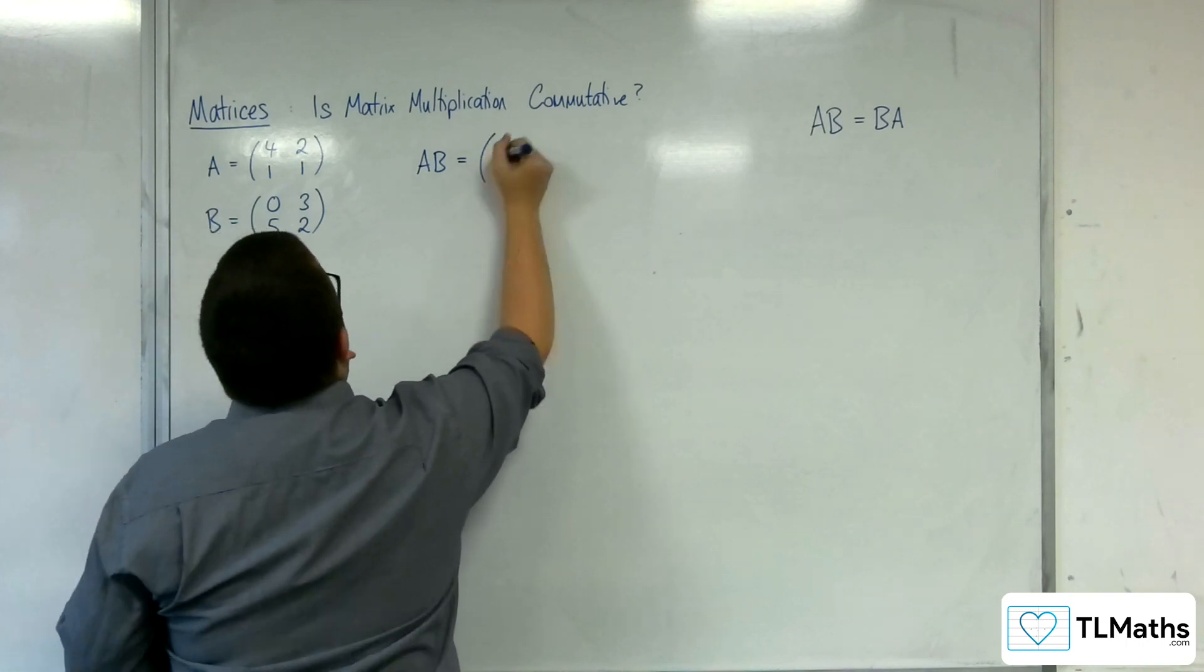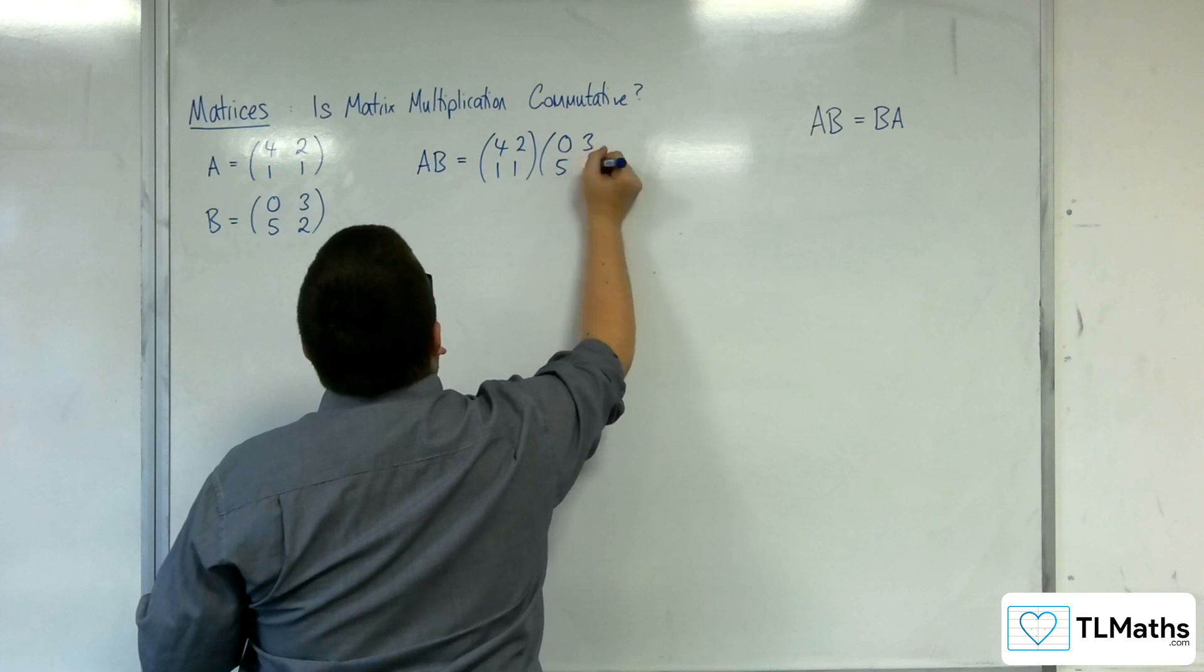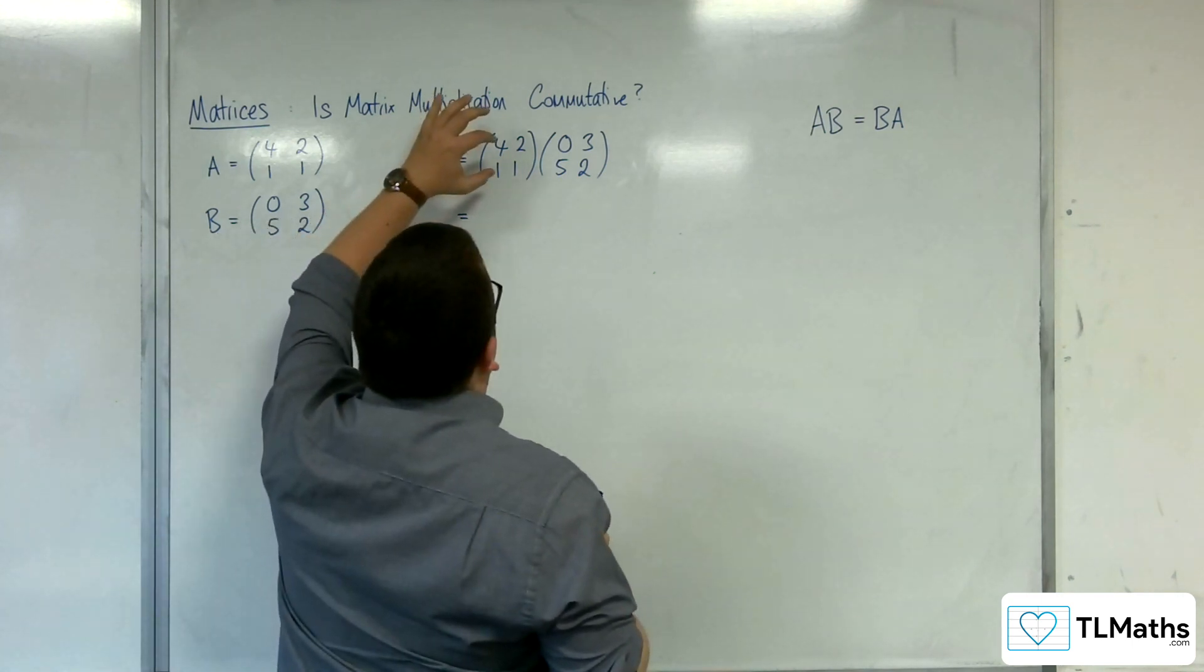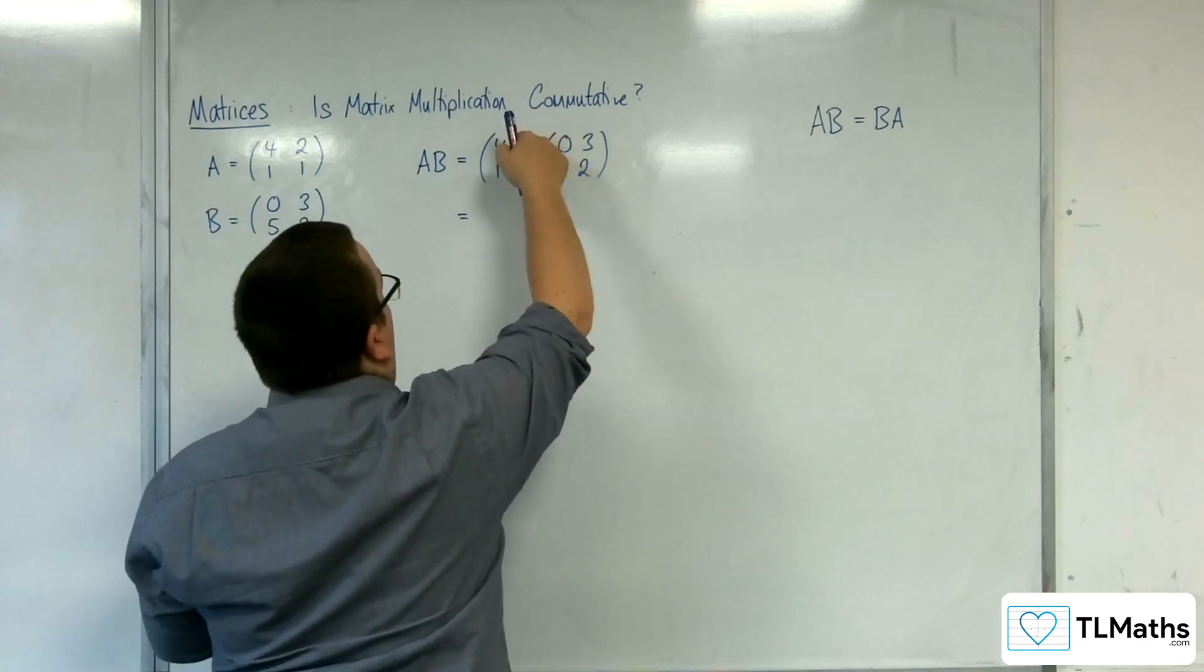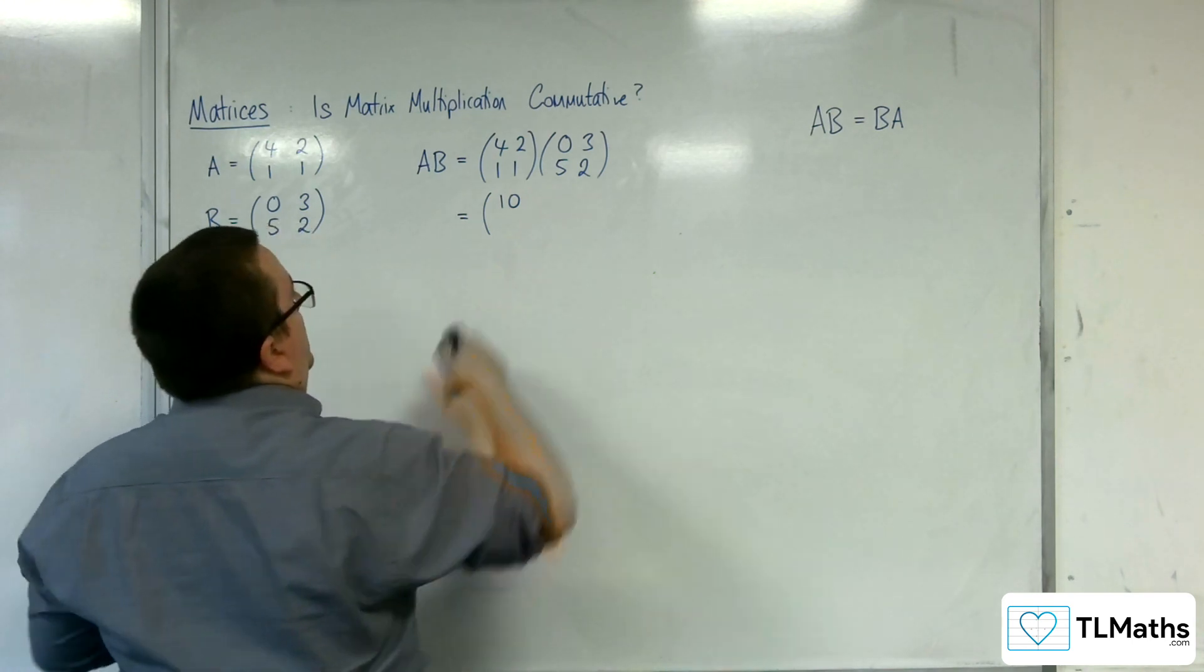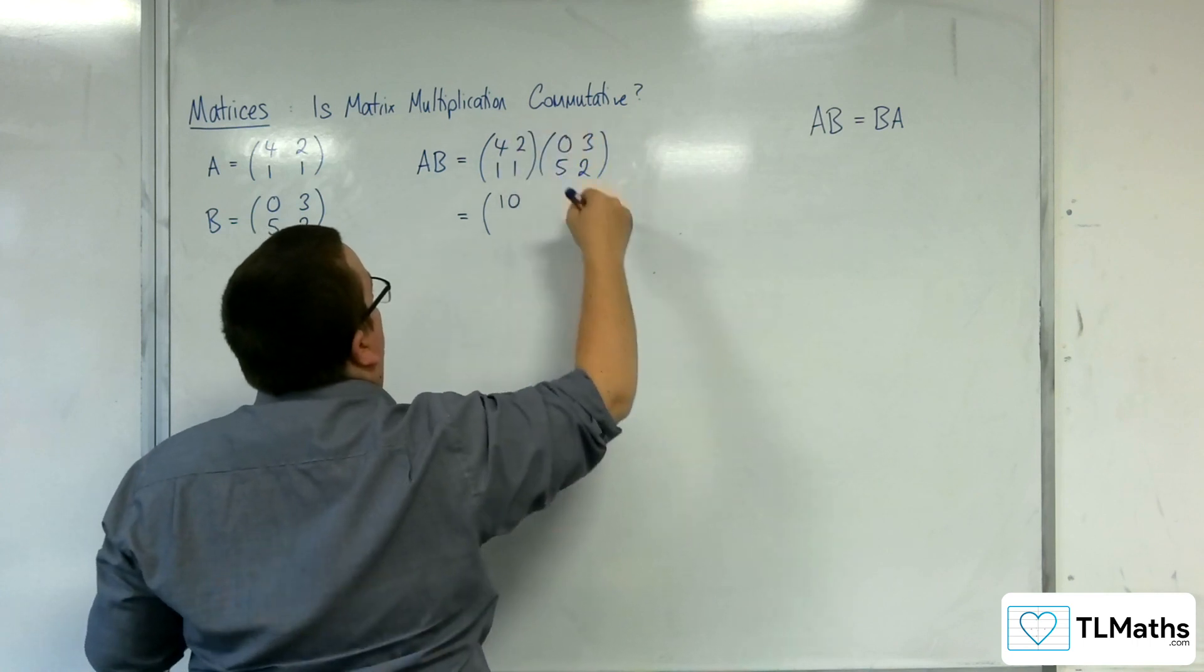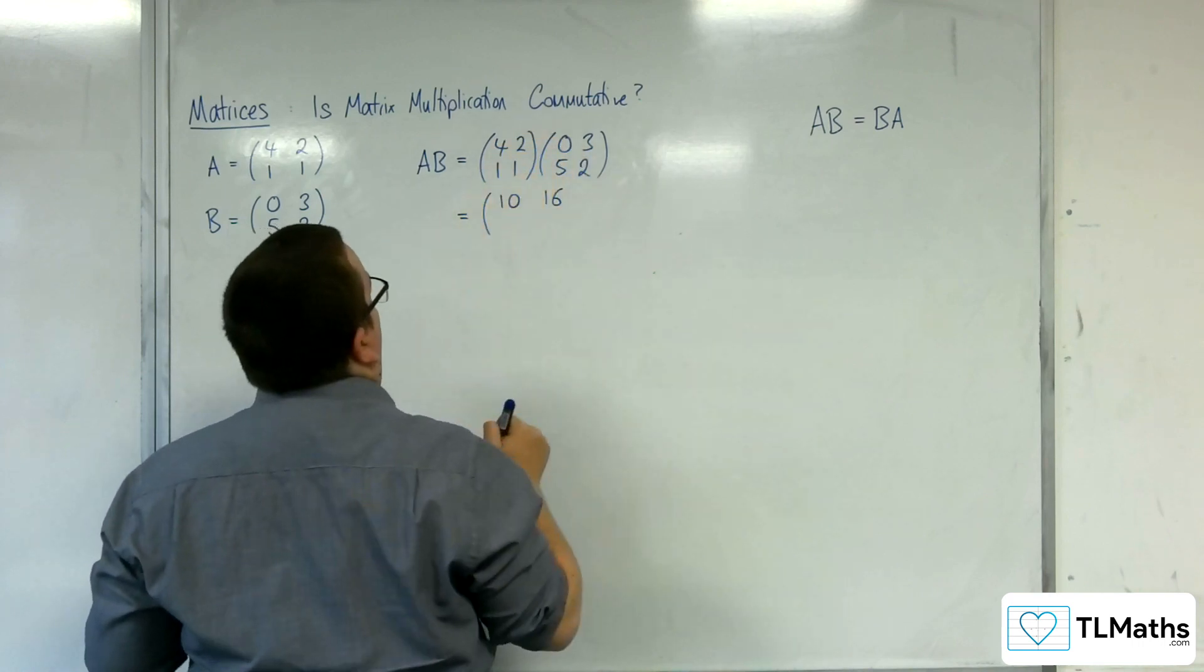So we're going to start off by finding AB. Multiplying (4,2; 1,1) by (0,3; 5,2). So we have 4,2 multiplied with the 0,5. 4 times 0 is 0, 2 times 5 is 10, so our first entry is 10. Then we have 4,2 times the 3,2. So 4 lots of 3 is 12, 2 times 2 is 4, so 12 plus 4 is 16.